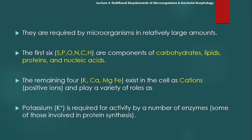The remaining four macro elements — potassium, calcium, magnesium اور iron — they exist in the cell as cations اور cations کیسے کہتے ہیں؟ They are positive ions۔ Anions ہم negative ions کو کہتے ہیں اور cations ہم positive ions کو کہتے ہیں۔ And they play a variety of roles in microorganism کی body میں۔